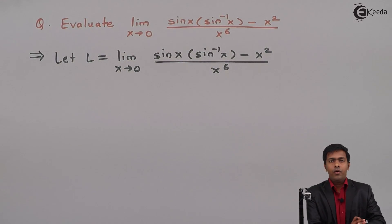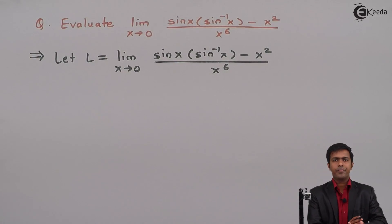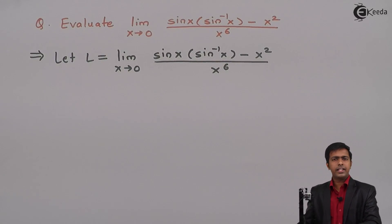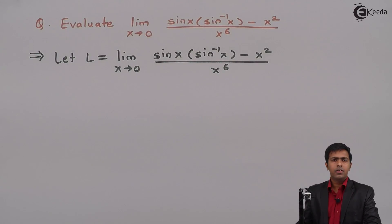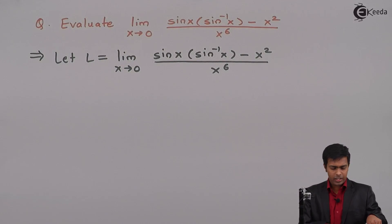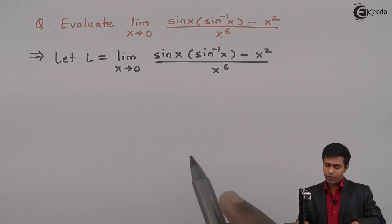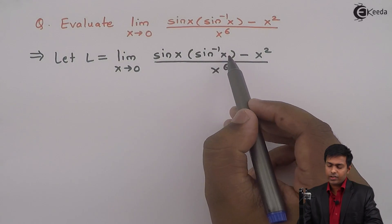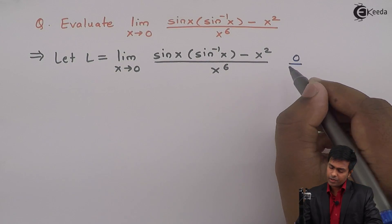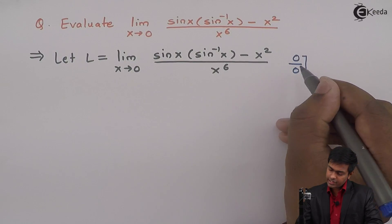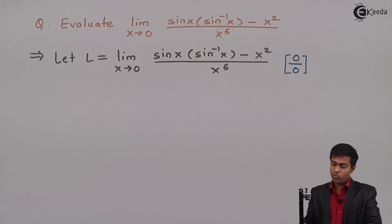Now we will substitute x tends to 0 and check whether we are getting an indeterminate form or a finite value. If we substitute x as 0, we get sin(0) as 0, sin inverse(0) as 0, minus 0 squared which is 0. So we are getting 0 in the numerator and 0 raise to 6 is 0 in the denominator — that is 0 upon 0, which is indeterminate form.